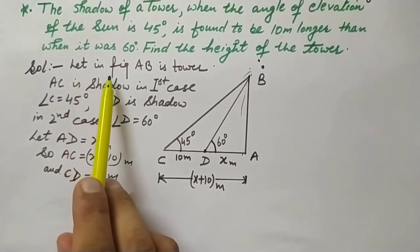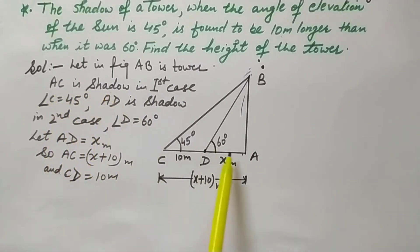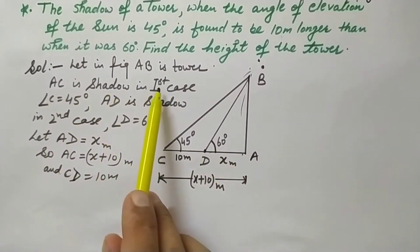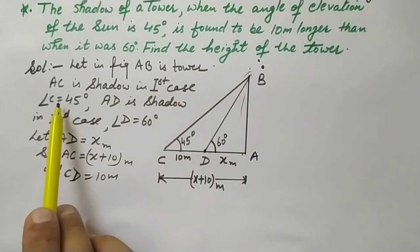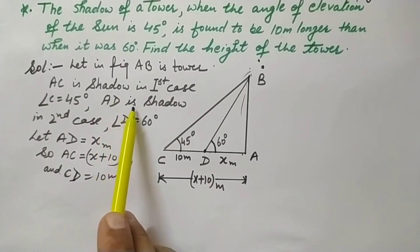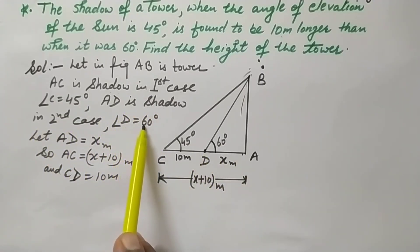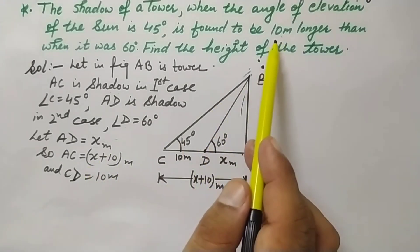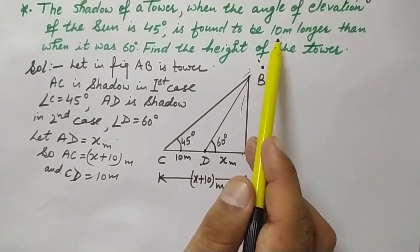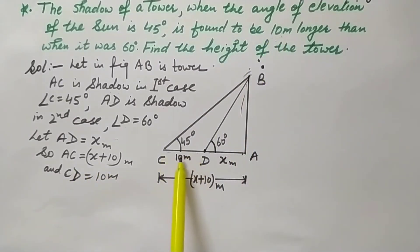Let AB be the tower, AC be the shadow in the first case, and angle C (angle of elevation) is 45 degrees. AD is the shadow in the second case, when angle D (angle of elevation) is 60 degrees. Let AD shadow length be X meters, then AC will be X plus 10, because at 45 degrees elevation the shadow is 10 meters longer. So CD is 10 meters.